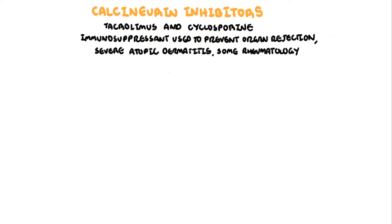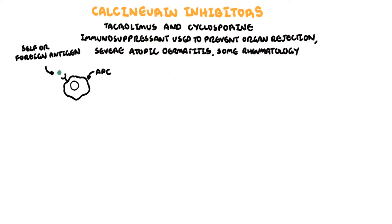Calcineurin inhibitors essentially inhibit the synthesis of interleukin-2. Normally, antigen-presenting cells such as macrophages pick up an antigen — a new one, either foreign or a self-antigen — process it, and then present it on an MHC class 2 molecule towards T cells.